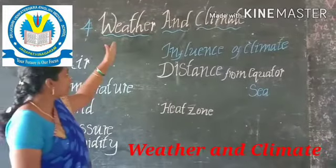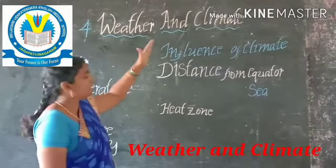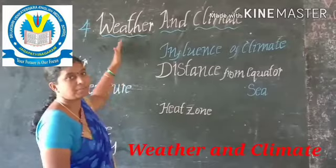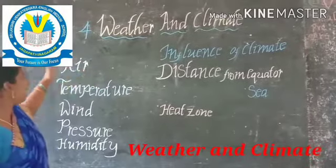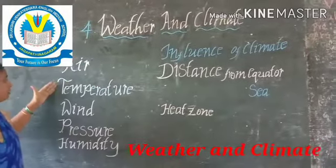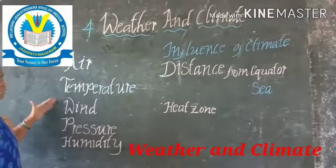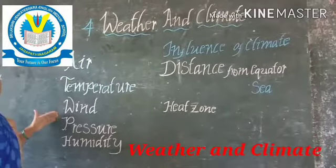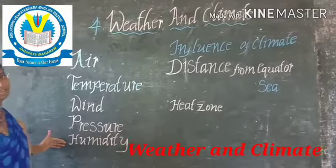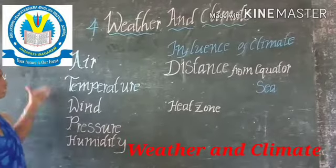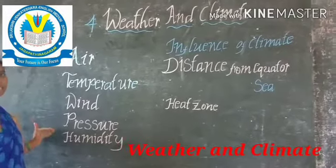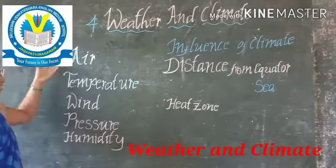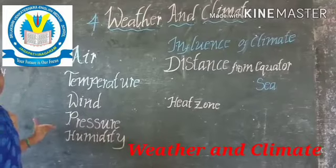So the difference between weather and climate. Weather means it depends upon the air, temperature, wind, pressure, and humidity. These are the causes. If the weather changes, we will have these differences.